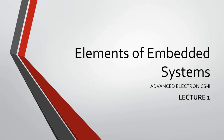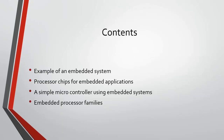Hello dear students, today we are starting a new chapter: Elements of Embedded Systems. This is a six-hour portion from your paper Advanced Electronics 2. An embedded system is a microcontroller or microprocessor-based system which is designed to perform a specific task. For example, a fire controller, a washing machine, an ATM machine, etc. are embedded systems.